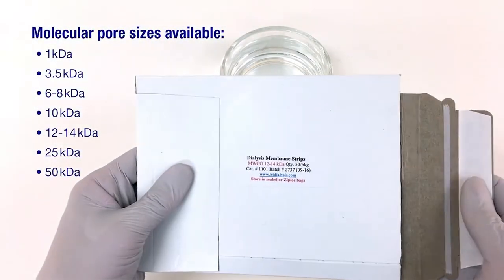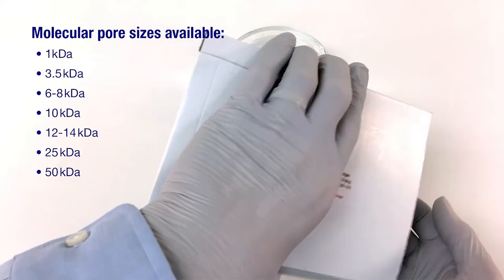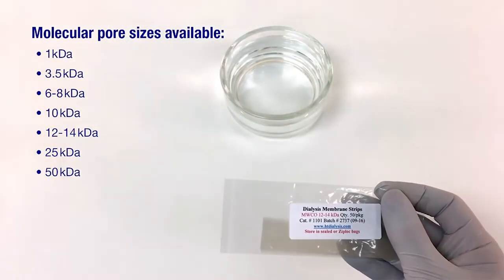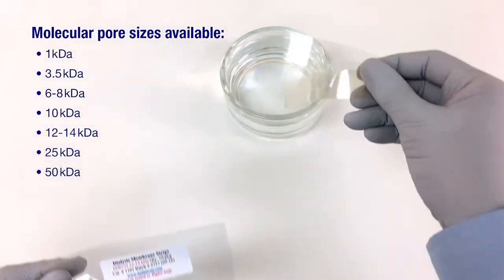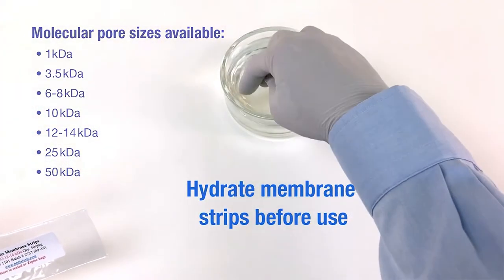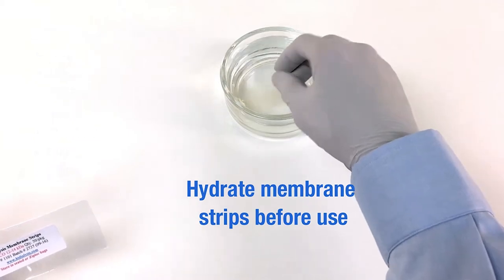Dialysis membranes are available in a wide range of molecular pore sizes: 1 kilodalton, 3.5 kilodaltons, 6 to 8 kilodaltons, 10 kilodaltons, 12 to 14 kilodaltons, 25 kilodaltons, and 50 kilodaltons.